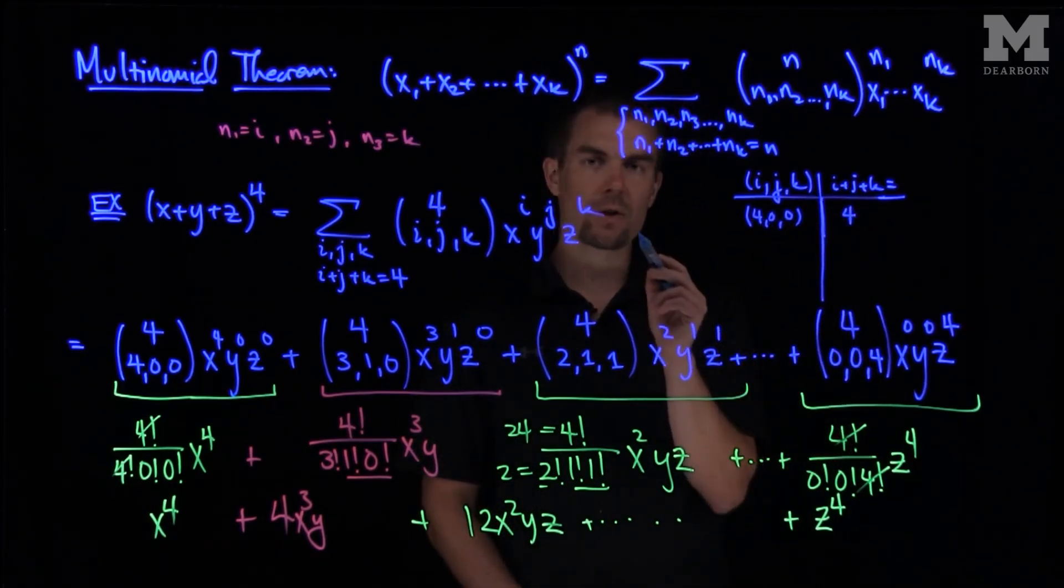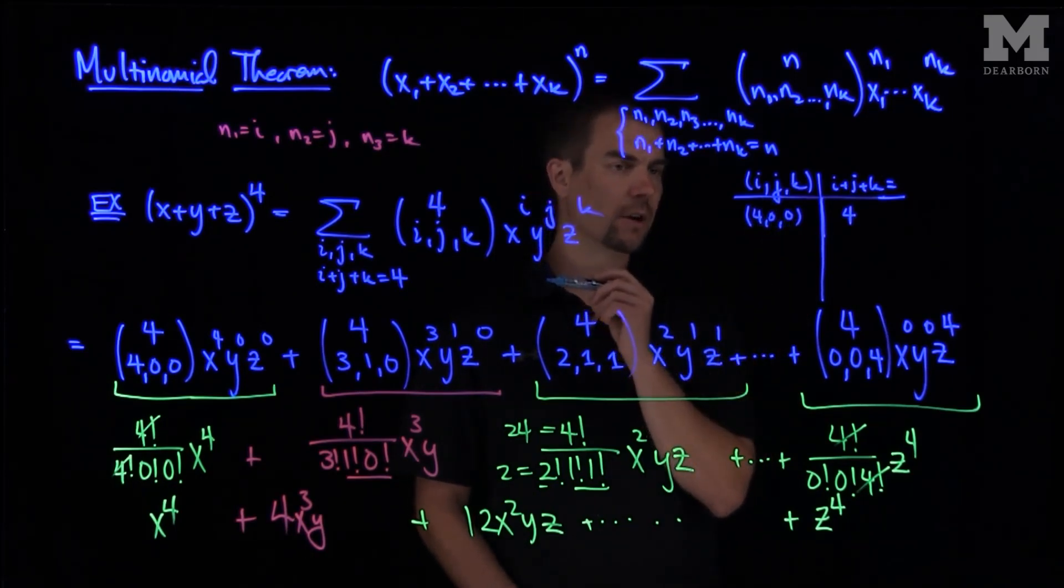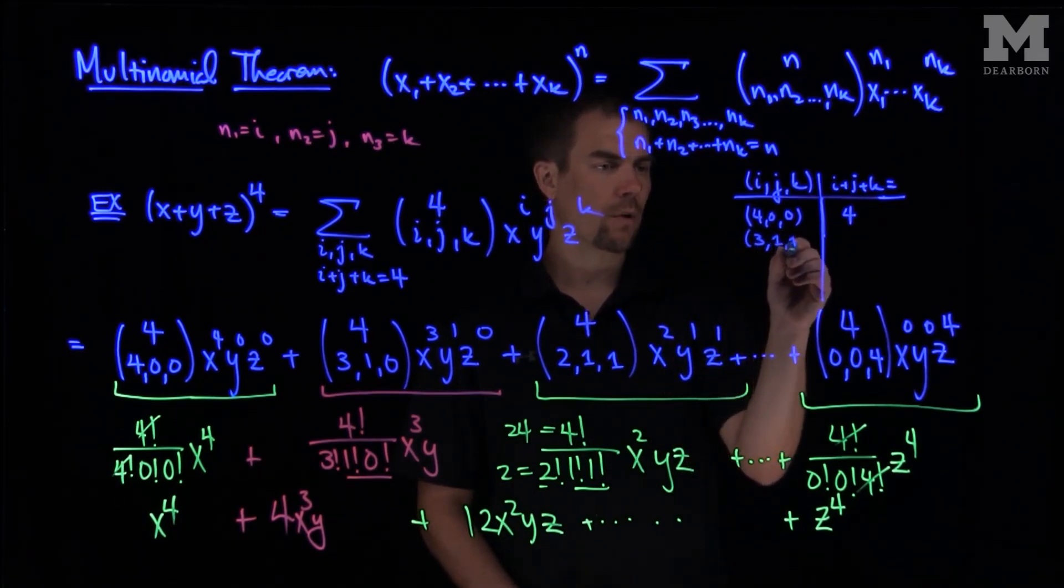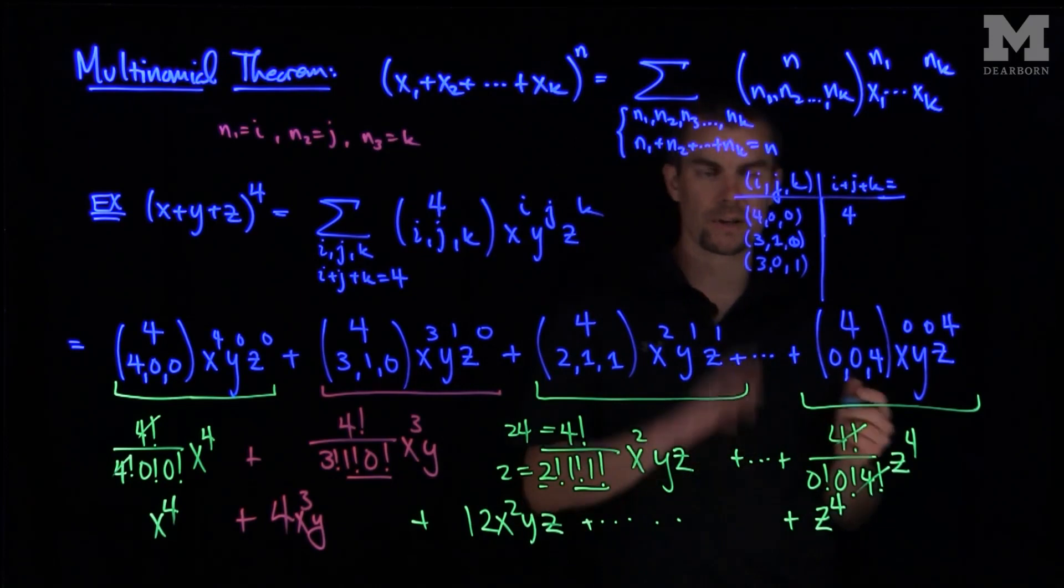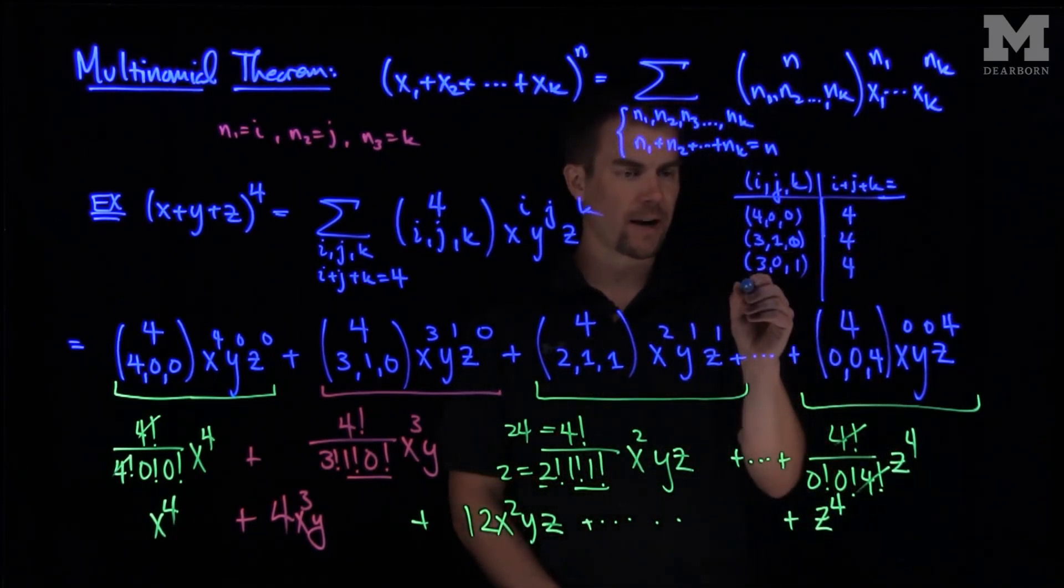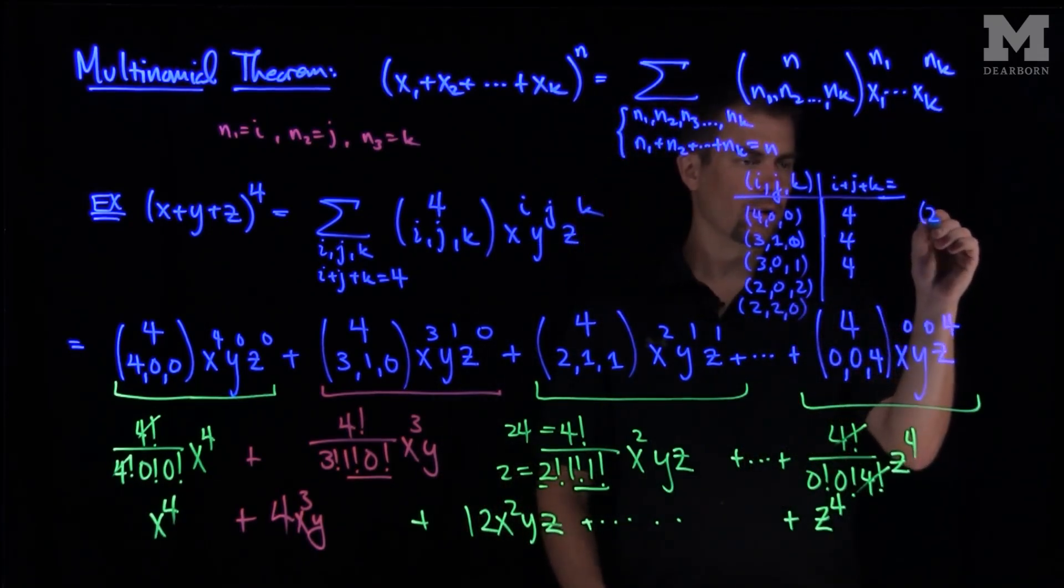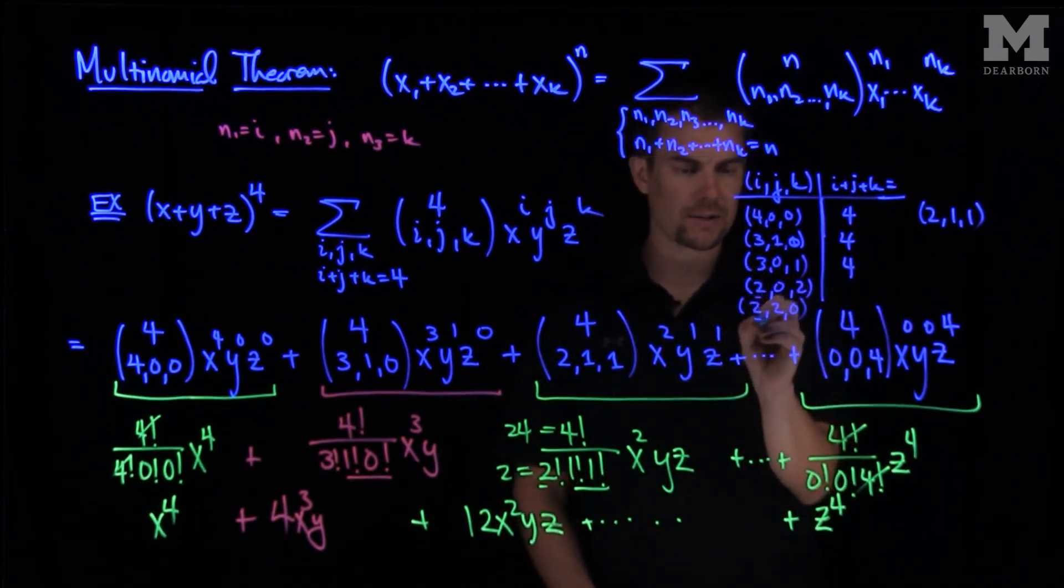Then there are several options. Now the i can no longer be four, because if i is equal to four, then if j and k are positive or non-negative, they have to be zero. So if i is three, you can have a (3,1,0) or (3,0,1). Those are the only possibilities when you have a three for the i. And you can think of the possibility when i is equal to two. So you can have (2,0,2), you can have (2,2,0), or you can have (2,1,1). And those are the only possibilities when i is equal to two.